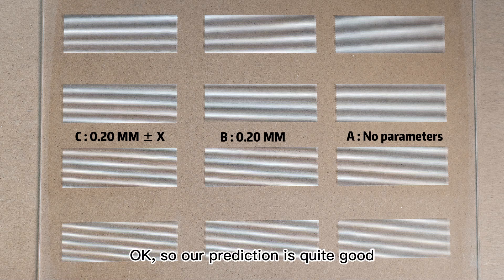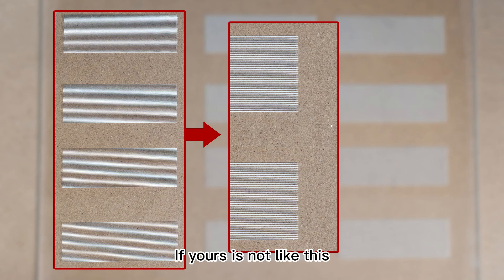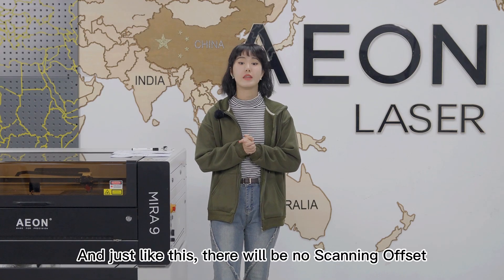Let's have another round. Okay, our prediction is quite good. It does look better. If yours is not like this, you just need a few more tests and adjust your parameters based on your test. And just like this, there will be no scanning offset.